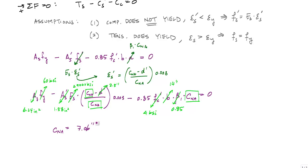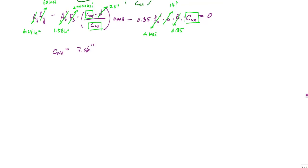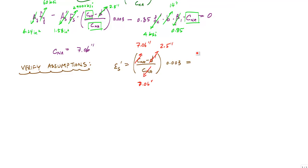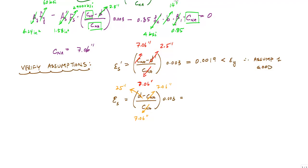Now I verify the assumptions again using similar triangles. Epsilon S prime equals 0.0019, which is less than epsilon Y — assumption one is good. The tensile strain in the steel is 0.008, which is greater than epsilon Y — assumption two is still good. I am finally good to go.